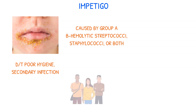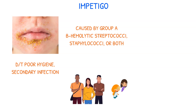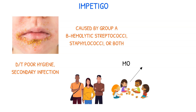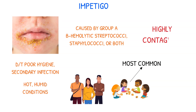This condition may occur in adults, but it's more common in children. It also occurs more commonly during hot, humid times of the year. The infection is highly contagious, and it spreads through direct contact with the blisters or crust of an infected person, or by touching contaminated objects.